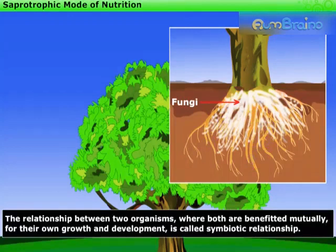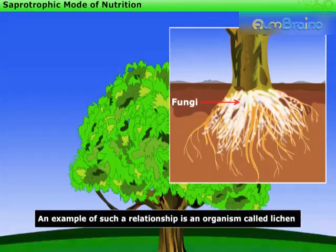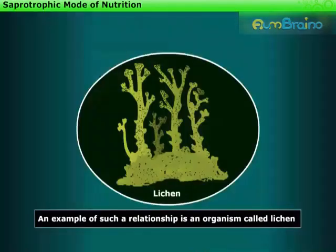The relationship between two organisms where both are benefited mutually for their own growth and development is called symbiotic relationship. An example of such a relationship is an organism called lichen.